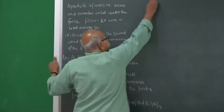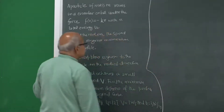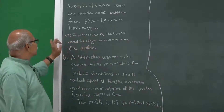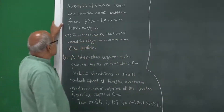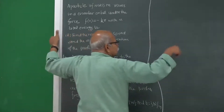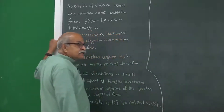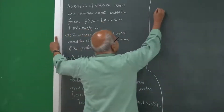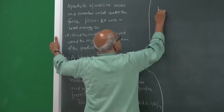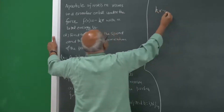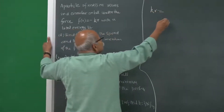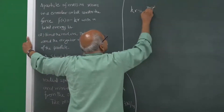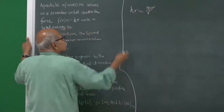Let us go one by one. The first part is to find the radius, speed, and angular momentum. We can use our knowledge of circular motion: force is k r towards the center, and that should be equal to m times v squared by r. This is one equation.